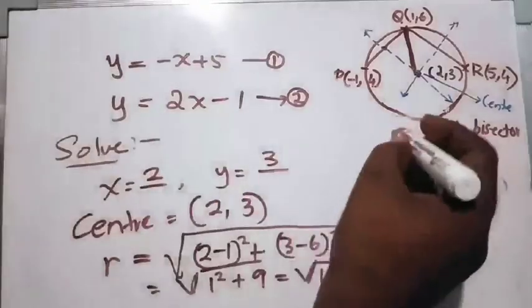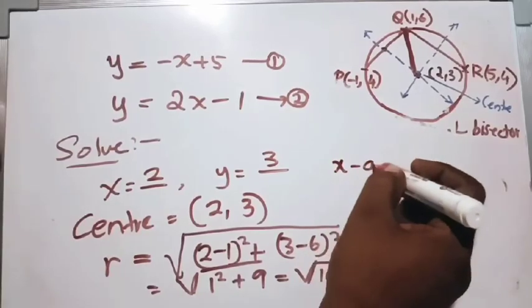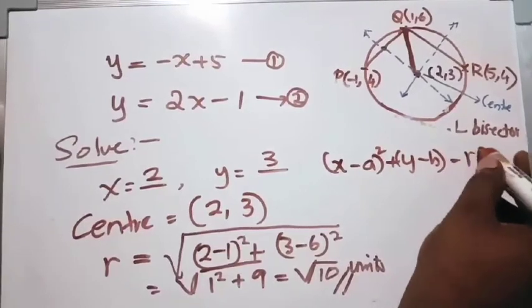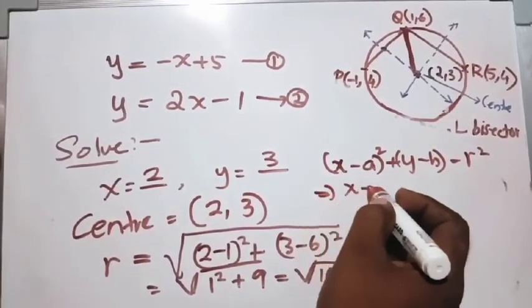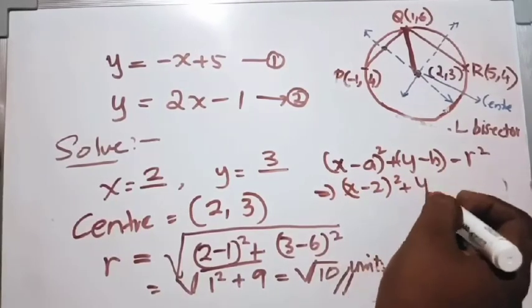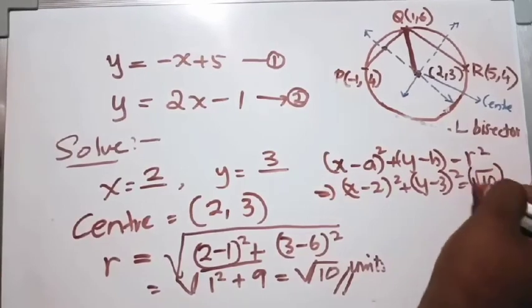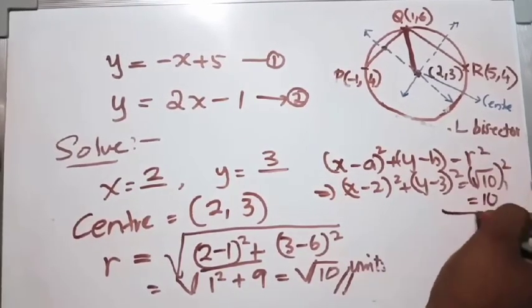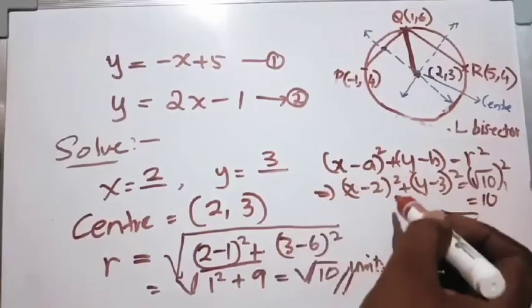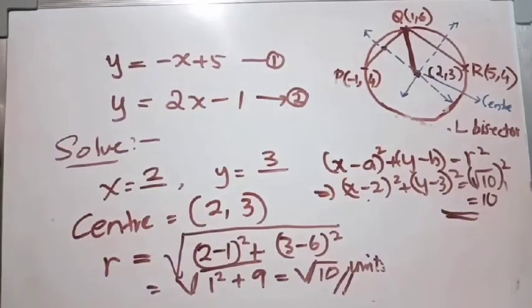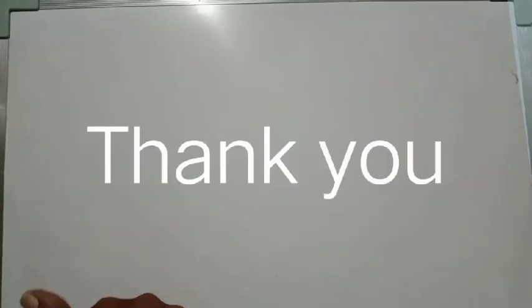Hence the equation of the circle is (x minus a) squared plus (y minus b) squared equals r squared. Since root 10 squared equals 10, the equation is (x minus 2) squared plus (y minus 3) squared equals 10. We will discuss more problems about the equation of circles in the coming classes. Thank you.